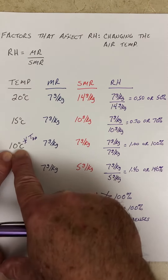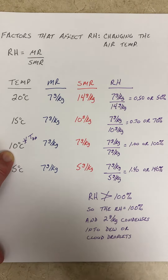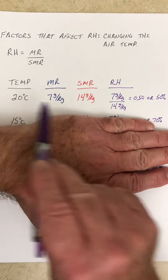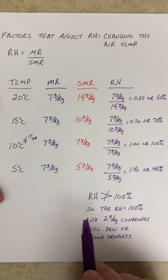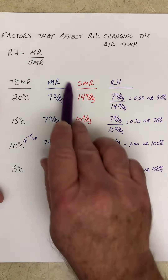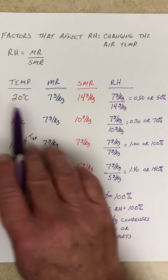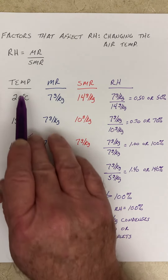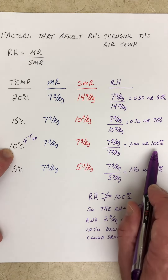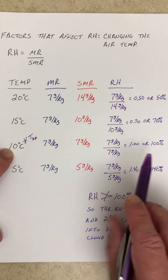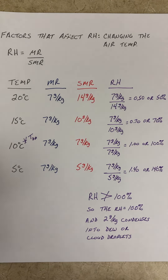The dew point temperature is the temperature to which you have to cool the air in order for saturation to occur. Given initial conditions, we can actually predict when that dew point temperature is going to be reached. We also have certain assumptions — in this case, the assumption was that the mixing ratio was not going to change. As shown here in tabular form, we can predict when the dew point temperature is going to be reached and when the relative humidity is going to be 100 percent. Hopefully this gives you a better understanding of what the dew point temperature is and how you achieve it.